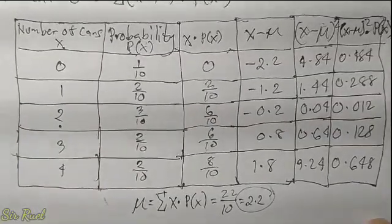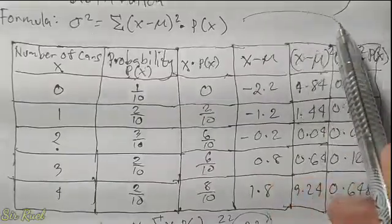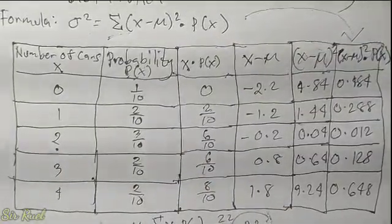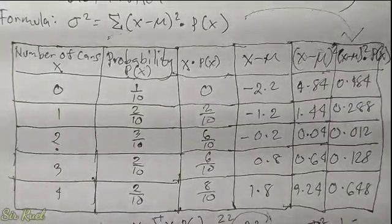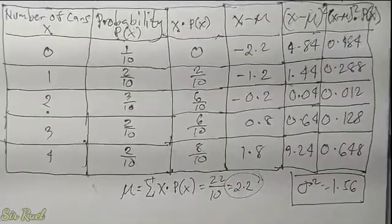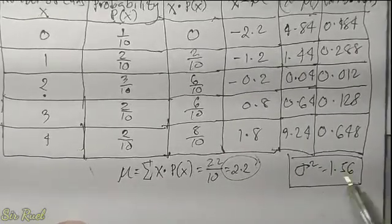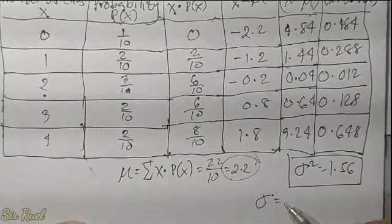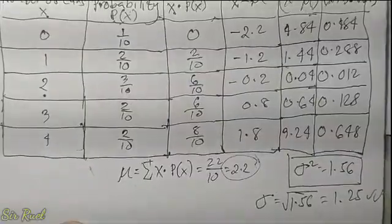Continuing: 3.24 times 2 over 10 is 0.648. That is our sixth column. Going back to the formula — summation of x minus mean squared times p of x — we add all values in that last column: 0.484 plus 0.288 plus 0.012 plus 0.128 plus 0.648 equals 1.56. So our variance is 1.56. For the standard deviation, we take the square root of the variance: the square root of 1.56 is 1.25.